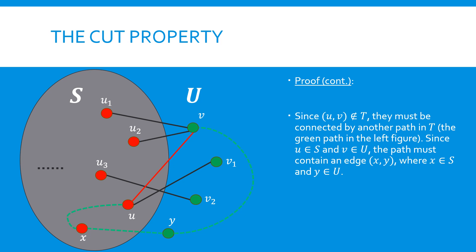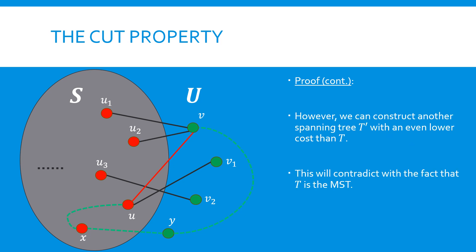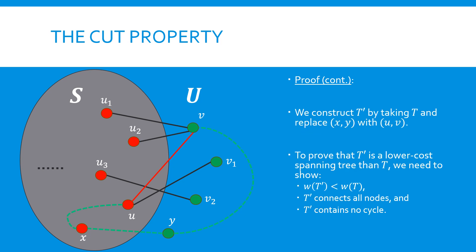Because U is in S and V is in U, this path must contain at least one boundary-crossing edge, such as XY, where X is in S and Y is in U. Now, let's construct another edge set T'. Our goal is to show that T' is a spanning tree with a lower weight than T, which will serve as the contradiction needed to prove the cut property. Specifically, we construct T' by replacing XY with UV in T. To achieve the goal, we need to prove three facts.